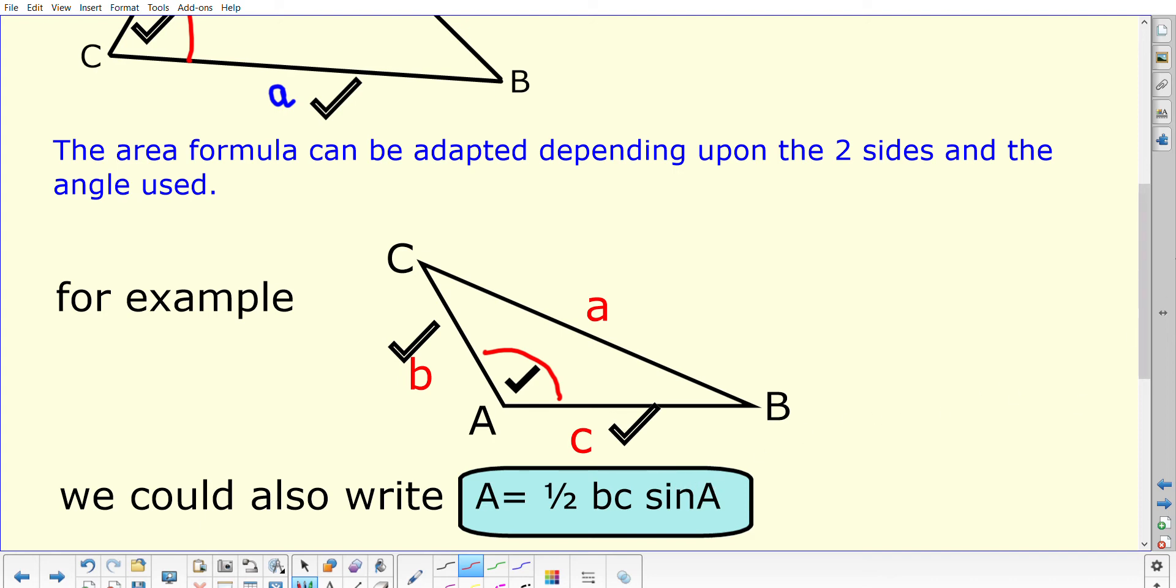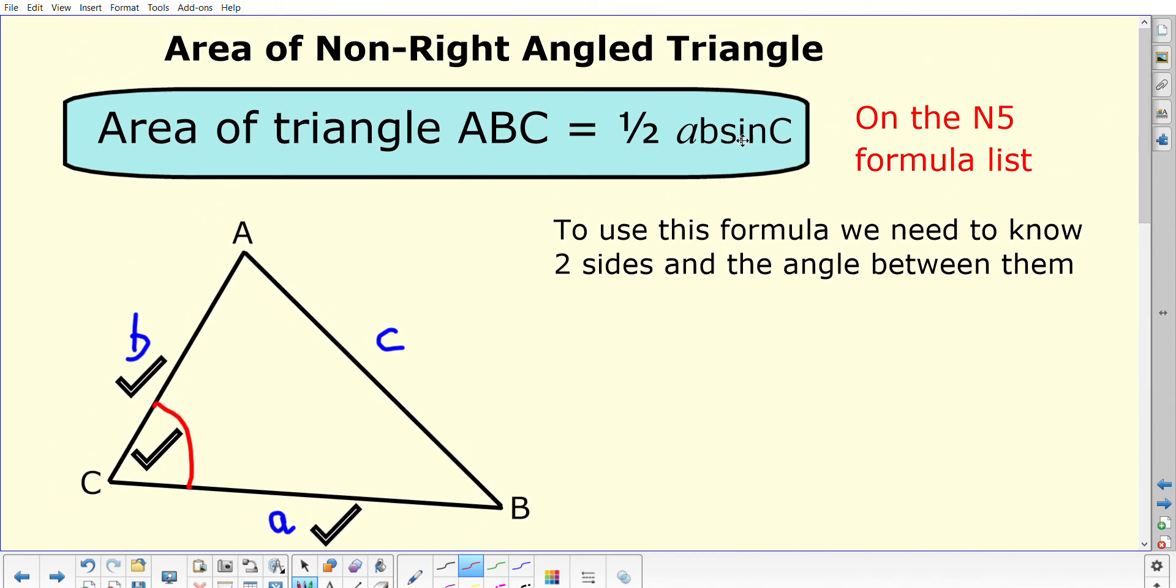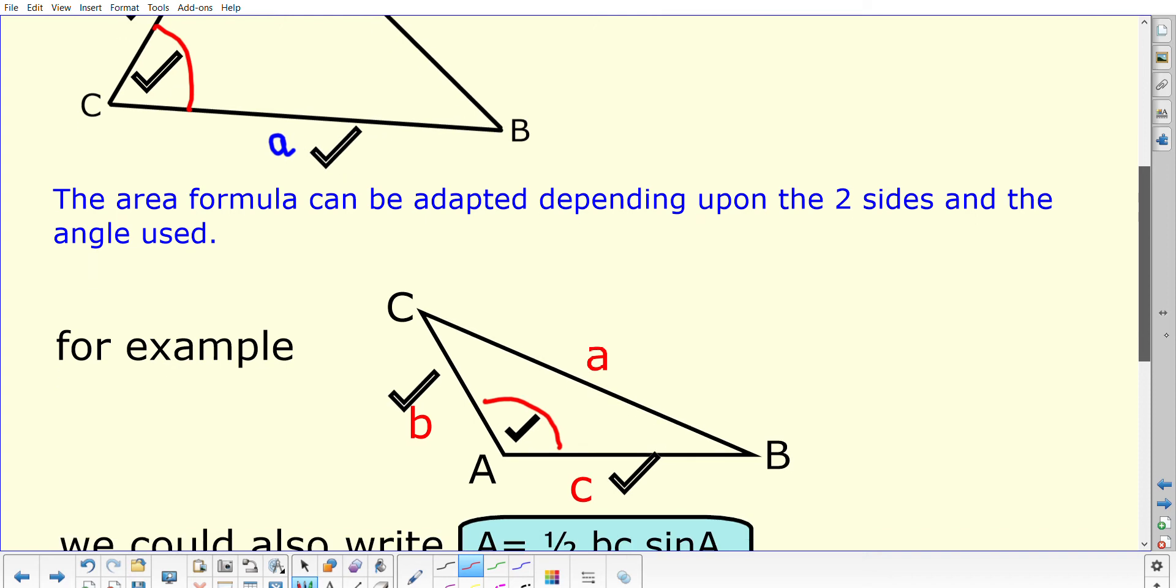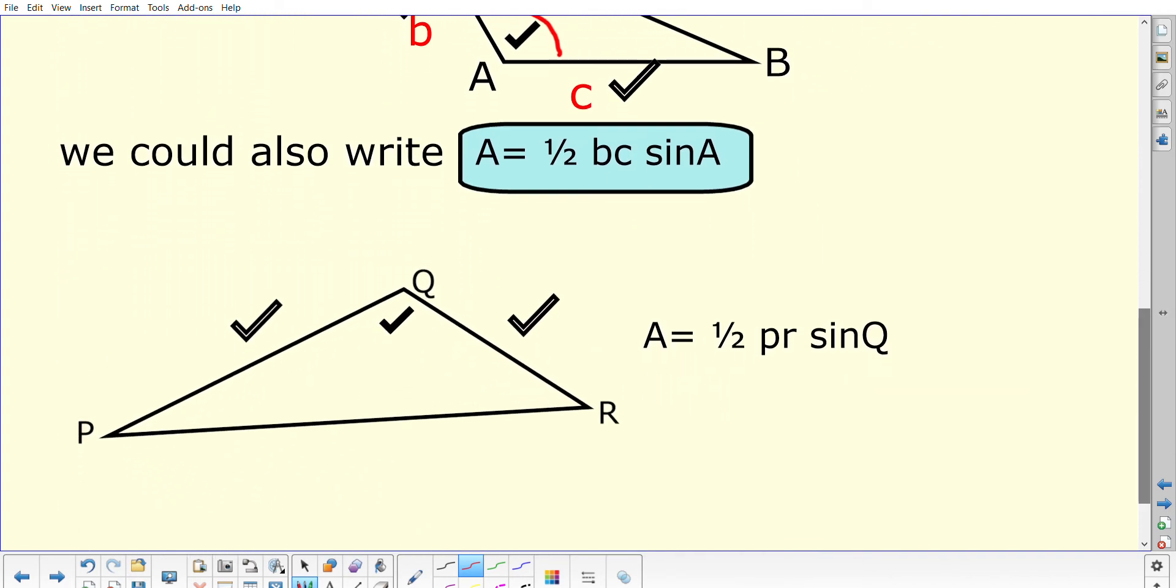Don't get hung up on the lettering—it's more a case of thinking about knowing two sides with the angle in between them, and that's what you're going to be substituting into the formula. You could get a triangle like this with capital P, Q, R at the corners. For this one, the angle you've got is Q, and the two sides either side are lowercase letter p and lowercase letter r. That's why our formula is ½pqsinR. Sorry, ½prsinQ.